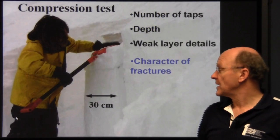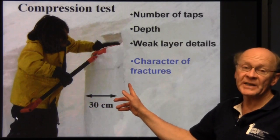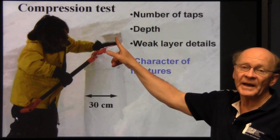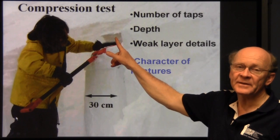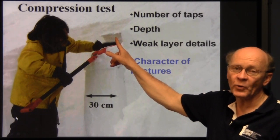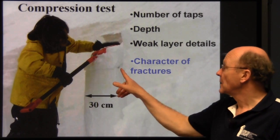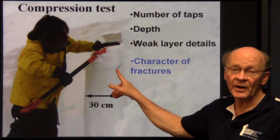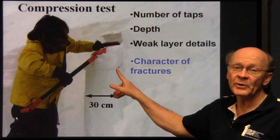To do the compression test, you isolate a column of snow about 30 centimeters across and 30 centimeters up along the slope, place a shovel on top, apply 10 easy taps with the fingertips moving from the wrist, 10 moderate taps moving from the elbow, and then 10 hard taps swinging from the shoulder. When a fracture occurs in the column, we note the number of taps required to cause the fracture, the depth of the weak layer, and some details about the weak layer.